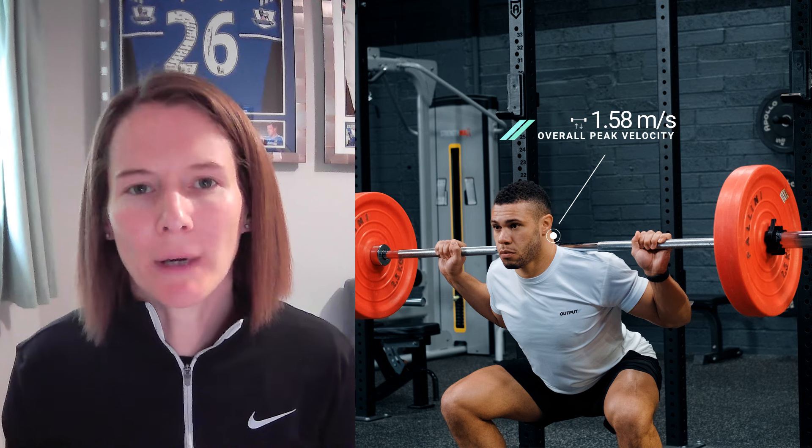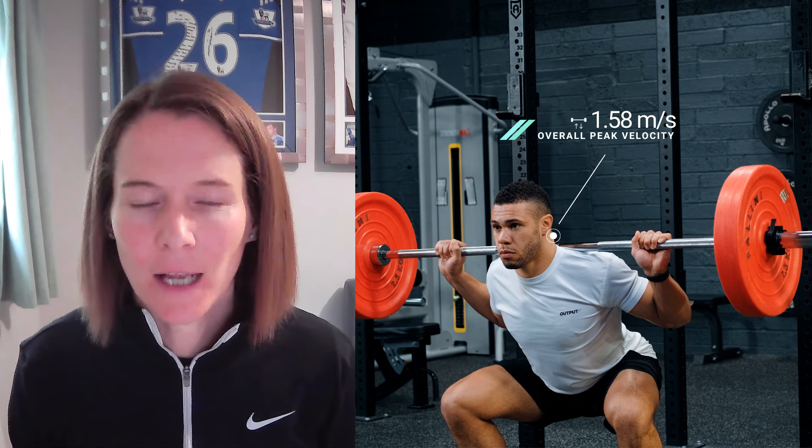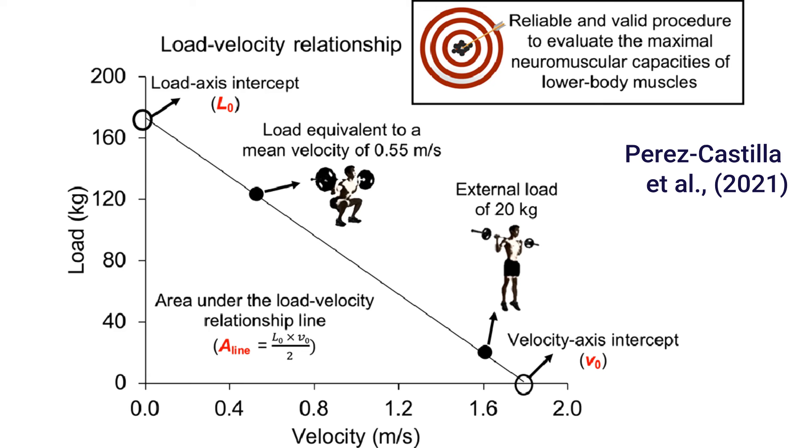Another measure that matters in soccer is velocity. Velocity-based training can be a really useful approach in most team sports, whereby we are trying to balance training stimulus with the recovery needed. Traditional percentage-based training relies on a fixed 1RM, but in reality that capacity fluctuates daily. So we want to use an auto-regulation approach, where we are actually tweaking the intensity based on the athlete's capacity on that day. Velocity-based training quantifies lifting output by measuring the speed of the bar, and as load increases, the concentric velocity decreases in an almost linear fashion.